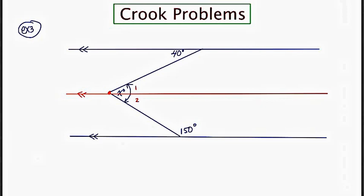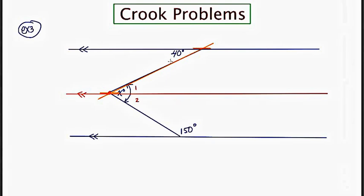Focusing on the upper portion: drawing in the figure in orange, the angle marked 40 and angle one are on alternating sides of the transversal — 40 is on the left, one is on the right — and we see the Z formation, which is a giveaway of alternate interior angles. If lines are parallel, alternate interior angles are congruent. So angle one is 40.